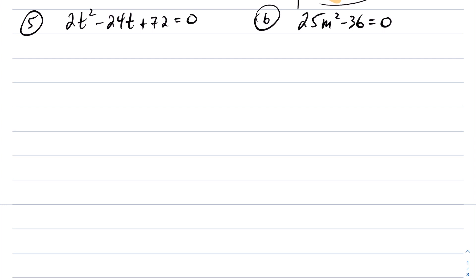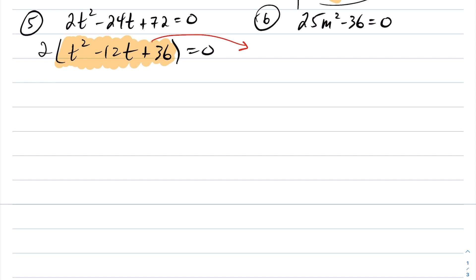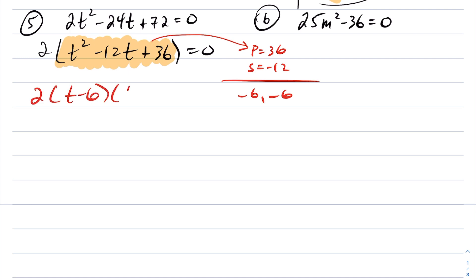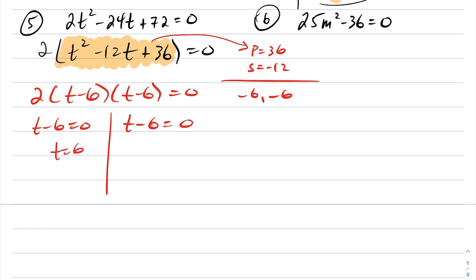For number 5, we actually have a GCF. I can factor a 2 out, leaving t squared minus 12t plus 36 equals 0. We're left with a simple trinomial inside. We need two numbers whose product is positive 36 and whose sum is negative 12 — those are negative 6 and negative 6. So this factors into 2 times (t minus 6)(t minus 6) equals 0. Either t minus 6 equals 0 or t minus 6 equals 0, meaning t is 6. So this quadratic has a single root at 6.